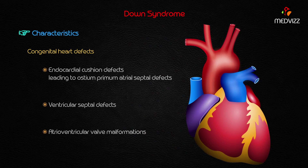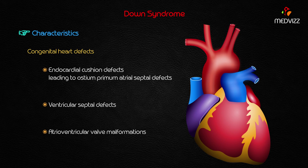The congenital heart defects mainly associated with Down syndrome are endocardial cushion defects, which lead to ostium primum atrial septal defects. Endocardial cushion defects are more common in Down syndrome than ventricular septal defects, though VSDs and atrioventricular malformations are also seen.